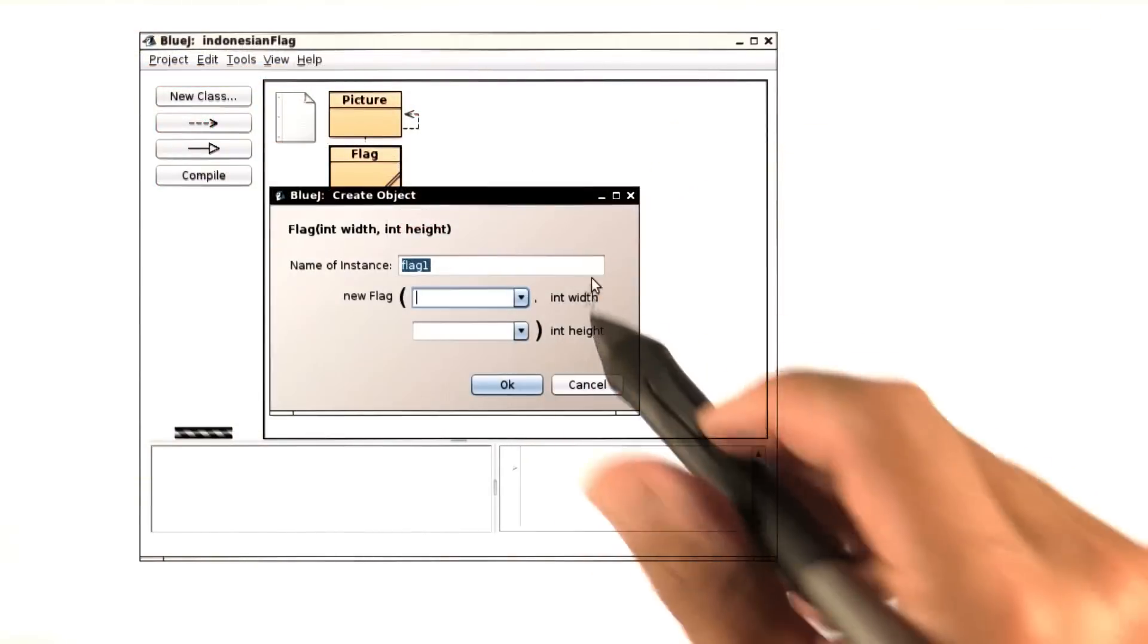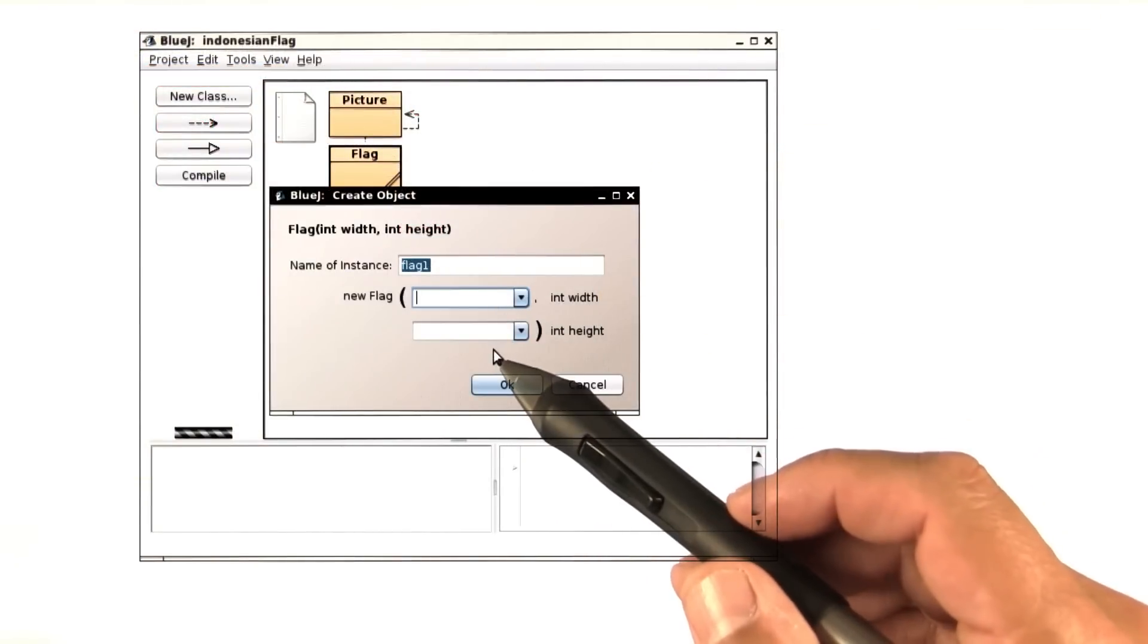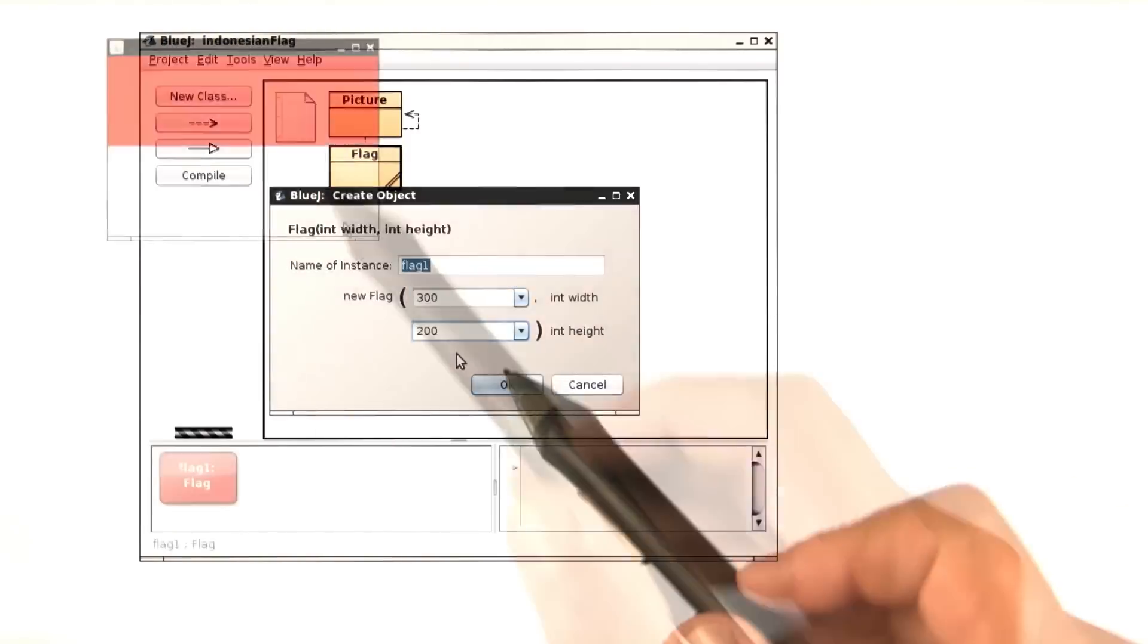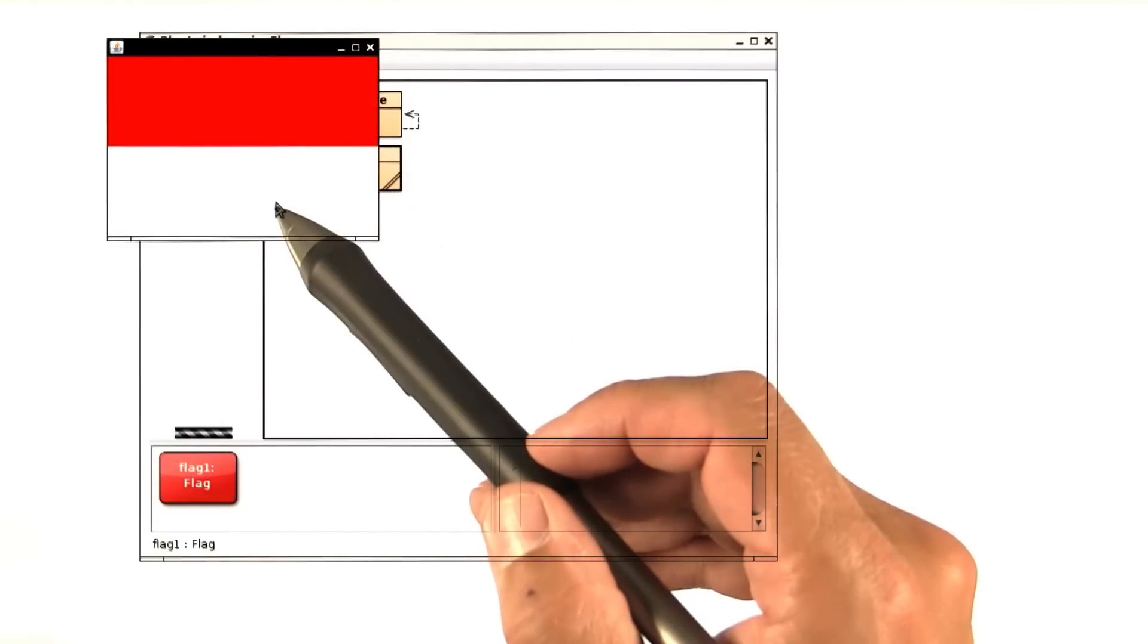I'll just make a flag. Many flags are one and a half times as wide as they're tall. And I'll use the same here. And here it is. Red on top, white on the bottom.